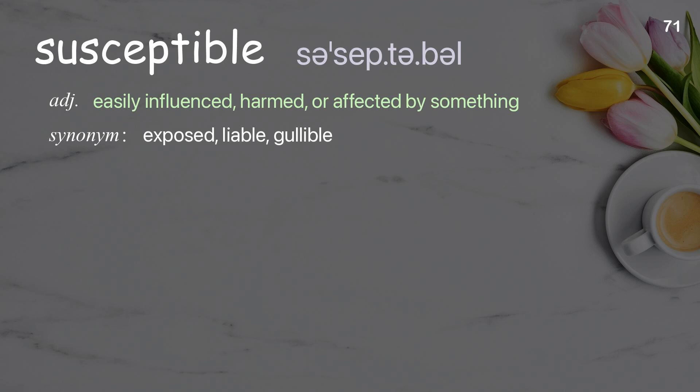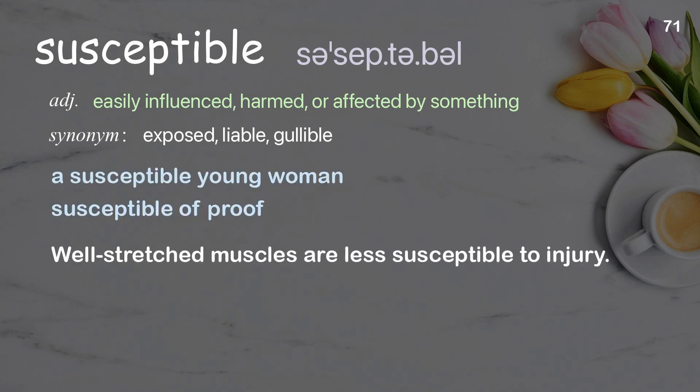Susceptible: easily influenced, harmed, or affected by something. Examples: a susceptible young woman, susceptible of proof. Well-stretched muscles are less susceptible to injury.